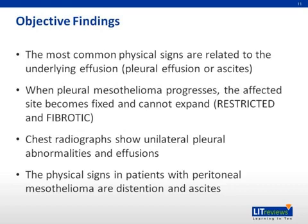What might you see on exam? Pleural effusions and ascites are the underlying cause of most exam findings. The exam will show dullness to percussion at these sites. Lung exam will likely be described as dullness to percussion with decreased breath sounds, defining a pleural effusion. Chest x-rays will confirm the effusions and may even hint at pleural thickening.